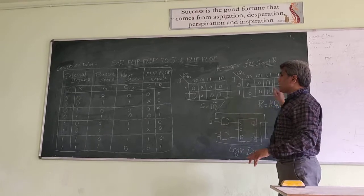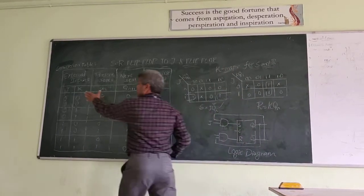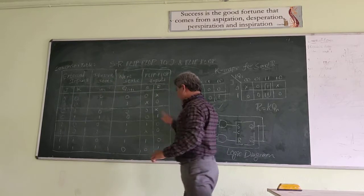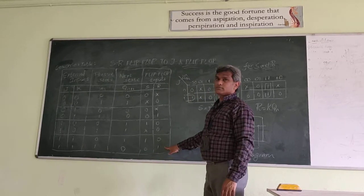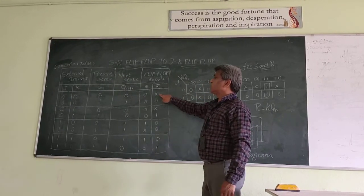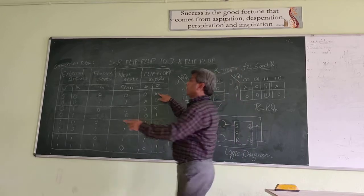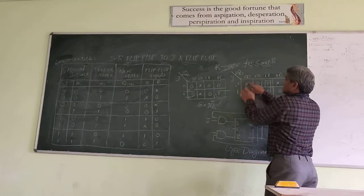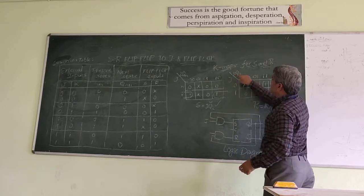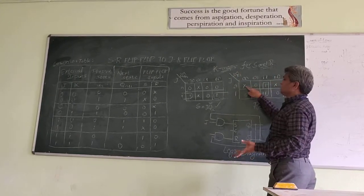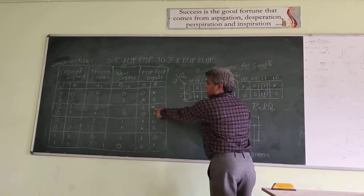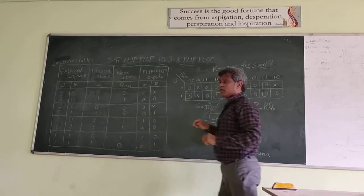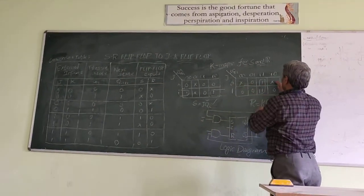Now, coming to R. This is the same inputs. Three inputs J, K, Qn. First part here. It will be all 0, 0, 0. This input is here. This is don't care. Next is don't care. These are 0 1 0. Then coming to 1, which is 0 1 1.